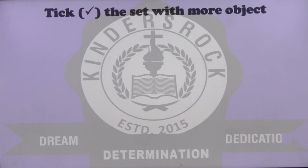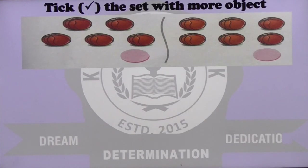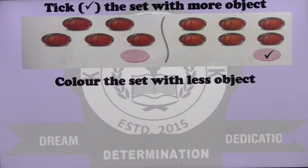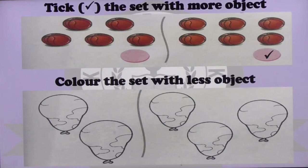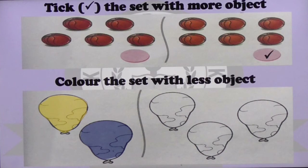Tick the set with more objects. There is the picture — in which set do you have more objects? That is the set which has more objects. Now color the set with less objects. There are two sets and three sets shown. Which is the set with less objects? We have to color it — that's the balloon with yellow color, and then you have the purple color.